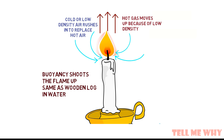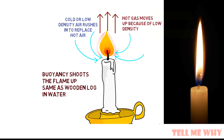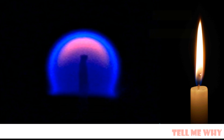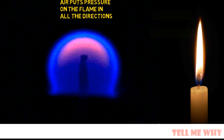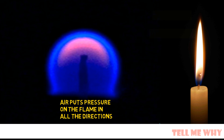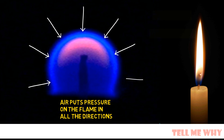It is this hot air rushing upwards that also causes the fire to flicker. However, in a microgravity environment, there is no reason for the heavier air to fall down and rush into the place of the lighter air. So the flame just remains a spherical blob, as you would imagine.